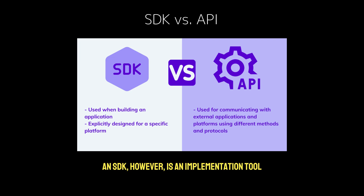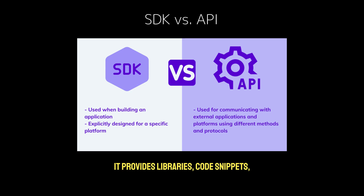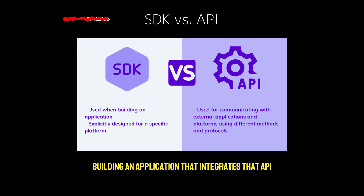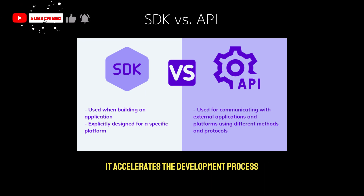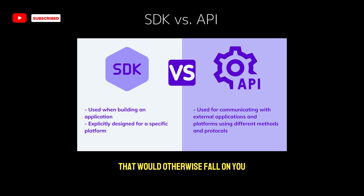An SDK, however, is an implementation tool. While an API gives you the interface — the what — an SDK provides the how. It provides libraries, code snippets, and tools to facilitate building an application that integrates that API into your product. It accelerates the development process by handling much of the setup and configuration that would otherwise fall on you.